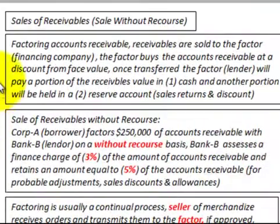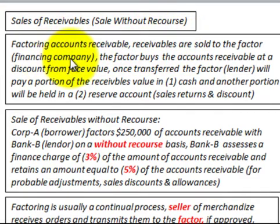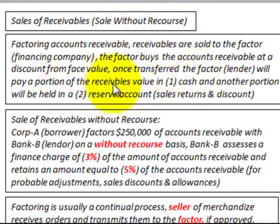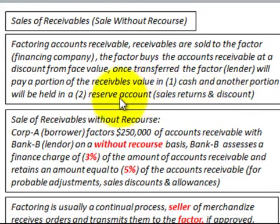In a factoring of accounts receivable, the receivables are sold to the factoring or financing company. The factor buys the accounts receivable at a discount from the face value. Once transferred, the factor will pay a portion of the receivables' value in cash, and another portion is held in a reserve account for sales returns, allowances, and discounts — not for any bad or uncollectible accounts.